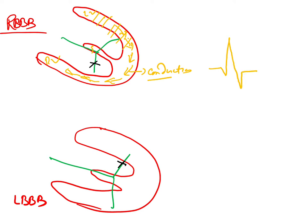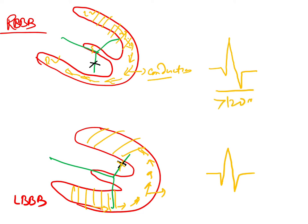Similarly, in case of left bundle branch block, if the left bundle branch is blocked, the impulse will activate the right ventricle, and then travel from the right ventricle to the left ventricle through the myocytes. Since conduction through myocytes is slow, we get wide QRS complexes. So whenever we get wide QRS complexes in an ECG, we should think of bundle branch blocks — wide meaning more than 120 milliseconds or more than three small squares.